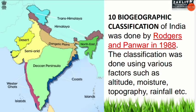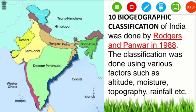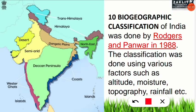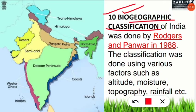Without wasting much time, let's get started. First of all, we should know what is meant by the bio-geographical zone. There are a total of ten bio-geographical classifications. Bio means life, so based on the flora and fauna, the geographic zones in India are divided into ten parts. This classification was done by Rogers and Pawar — you have to remember that — in 1988.